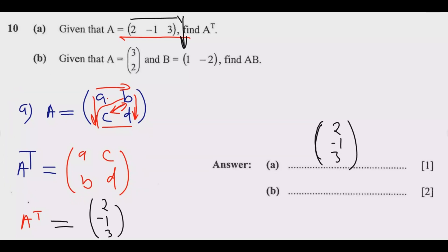Then we go to part (b). We are finding the multiplication of these two. To find AB, we have A which is (3; 2), a 2 by 1 matrix, multiplied by B which is (1 -2), a 1 by 2 matrix.